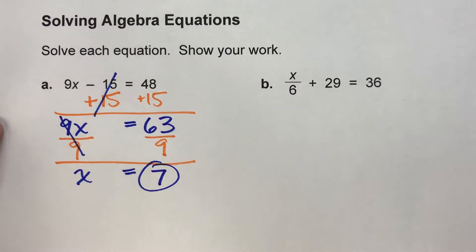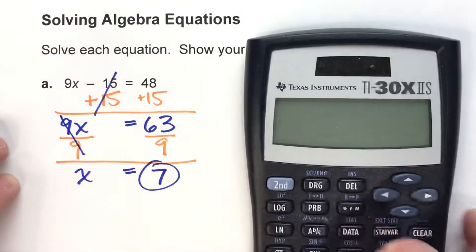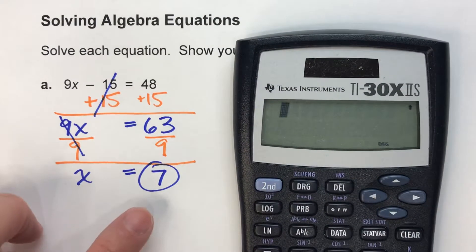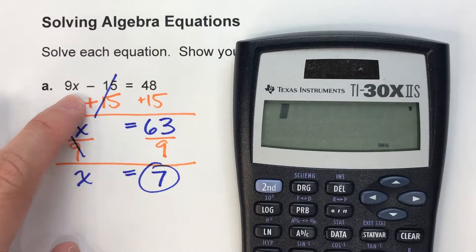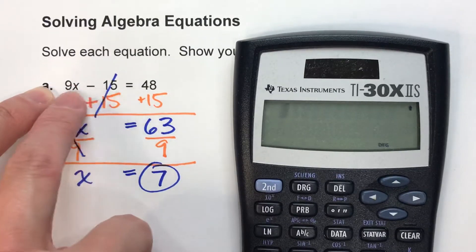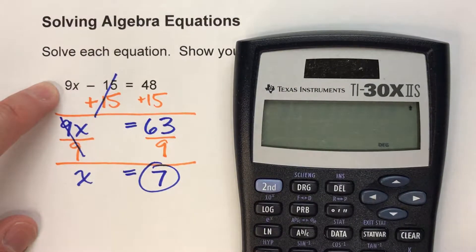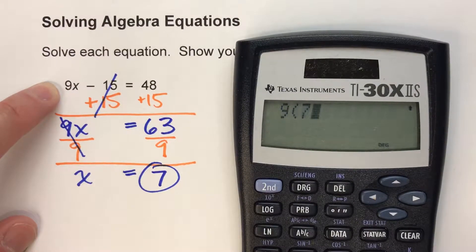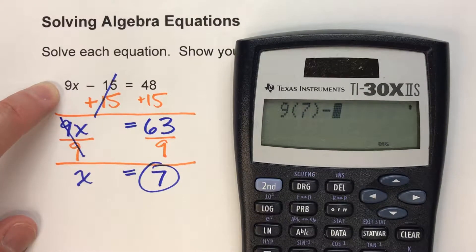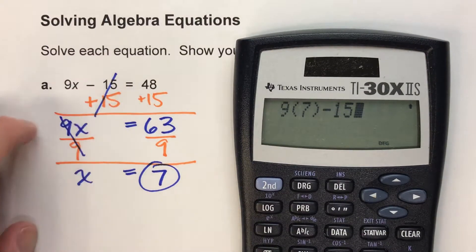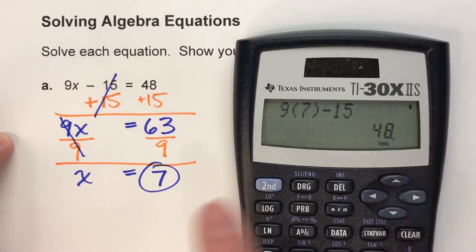If you're not sure or you want to check, there's an easy way to check it on the calculator. All we have to do is put 7 in for x and see if this truly does equal 48. Does 9 times 7 minus 15 equal 48? Yes, it does. So we know our answer's correct.